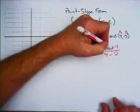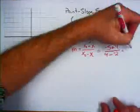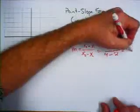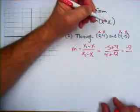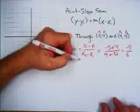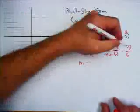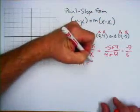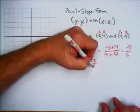Add the opposite. That gives us negative 9 over — add the opposite — 6. So m equals, reducing that, negative 3 over 2.